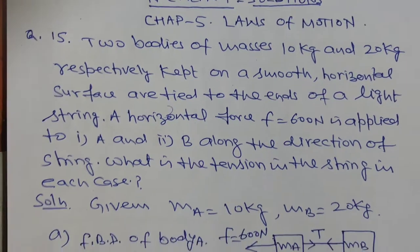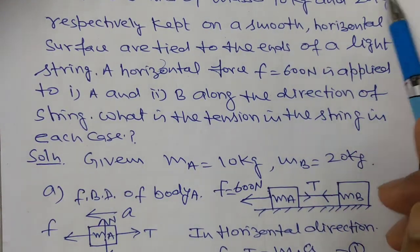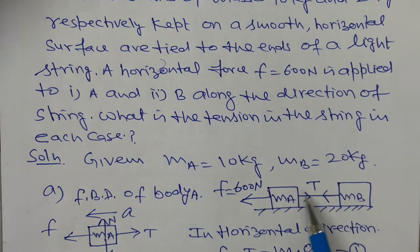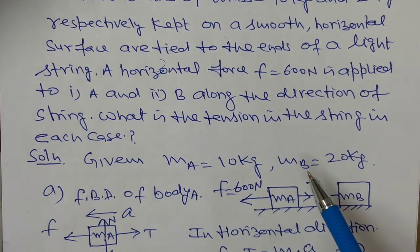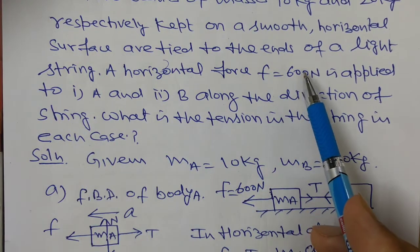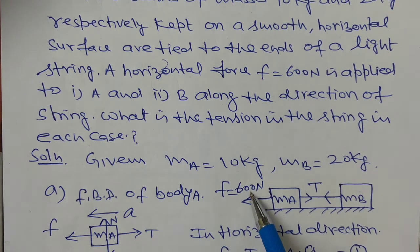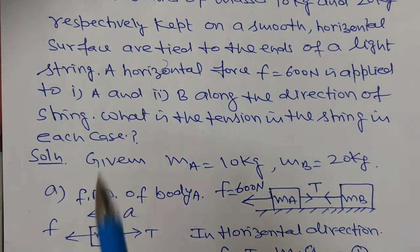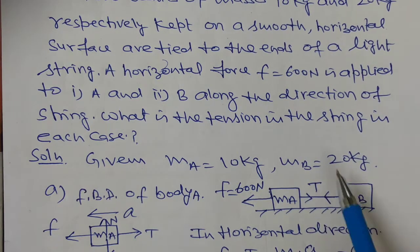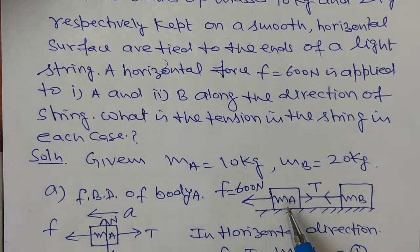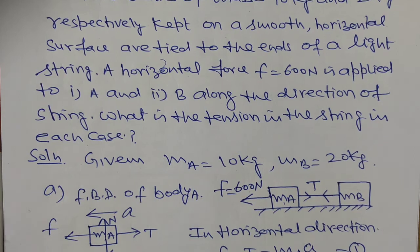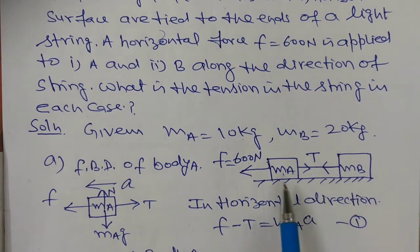In the question we are given two bodies A and B. Masses are 10 kg and 20 kg, and both bodies are connected with the string. Both bodies are joined with the help of a string. If a force of 600 N is applied — the question first says that force is applied on body A, this force 600 N is applied on body A, then on body B.